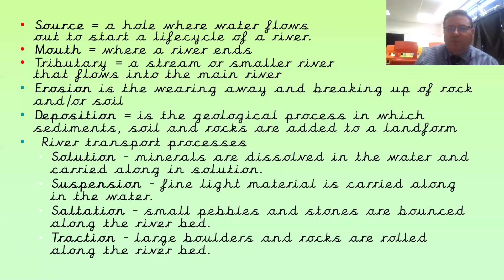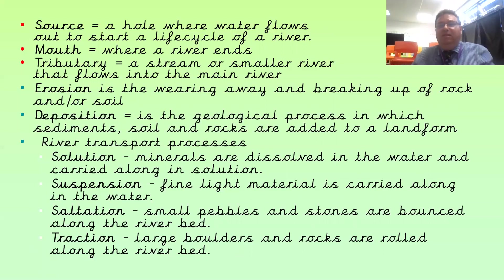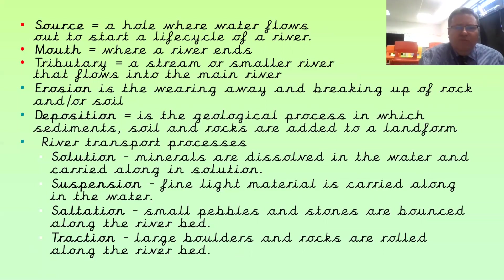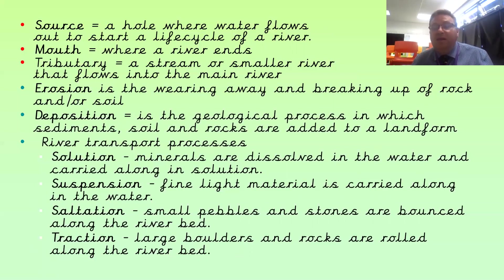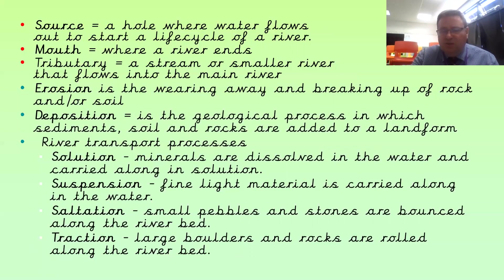Saltation is where small pebbles and stones are bounced along the riverbed. The river doesn't have enough power to lift them up and carry them, but it can push and bounce them along. Traction is the same thing but with large boulders and rocks — the river may have so much force, perhaps in a storm, that it pushes the boulders along the bottom. That's called traction. That's the end of our definitions on geography.